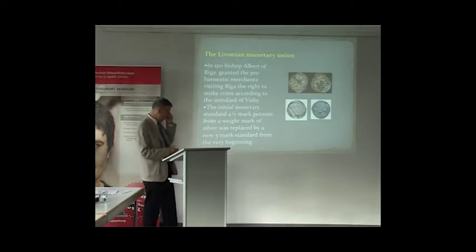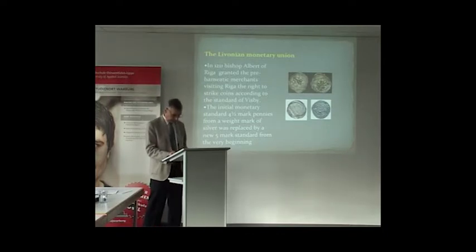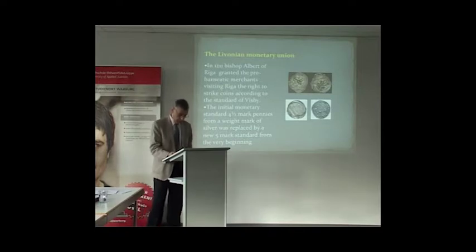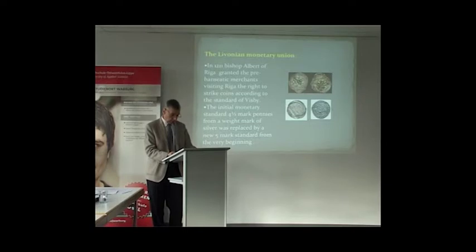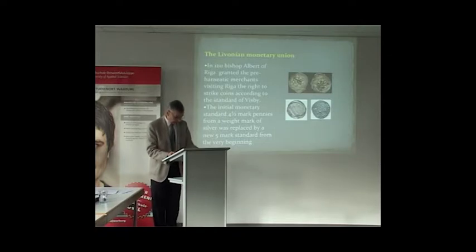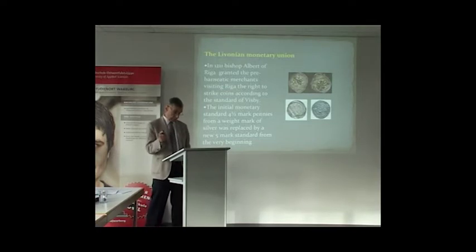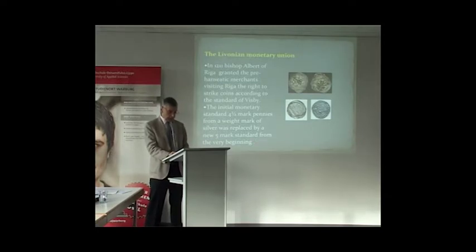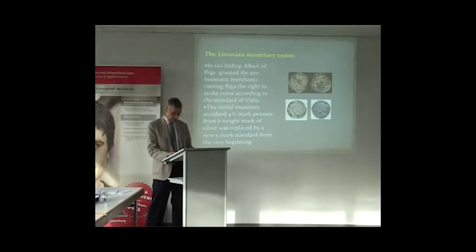The coins of Albert, as well as Nikolaus, followed the same standard as the average weight of their coins reaches between 0.14 and 0.15 grams, which means that either the minters did not abide the decree of Albert, because according to his decree the coins should be a bit heavier, or that the initial monetary standard from the very beginning was replaced by a new one, 6 mark coins from a silver mark.